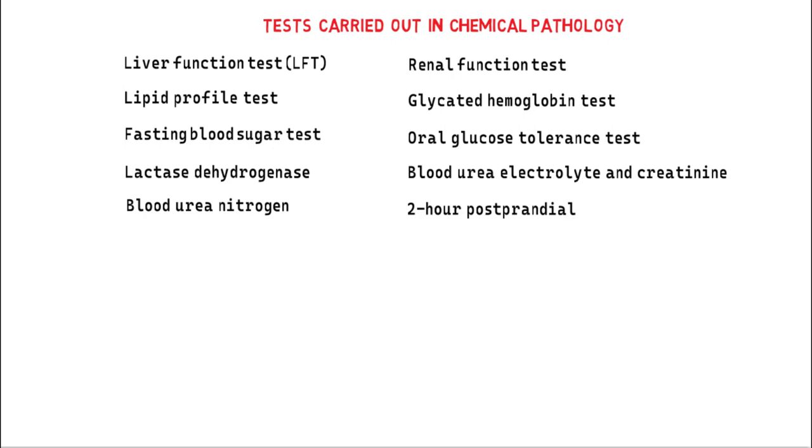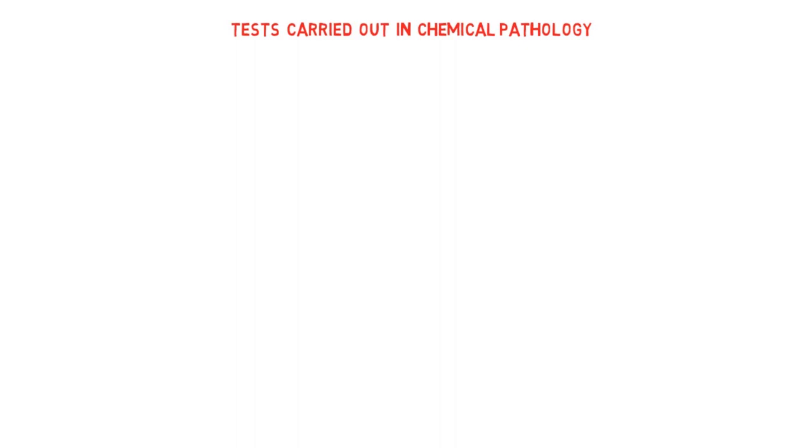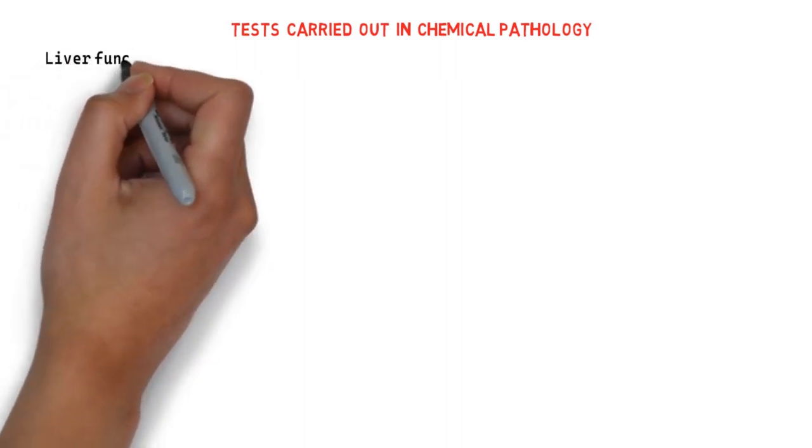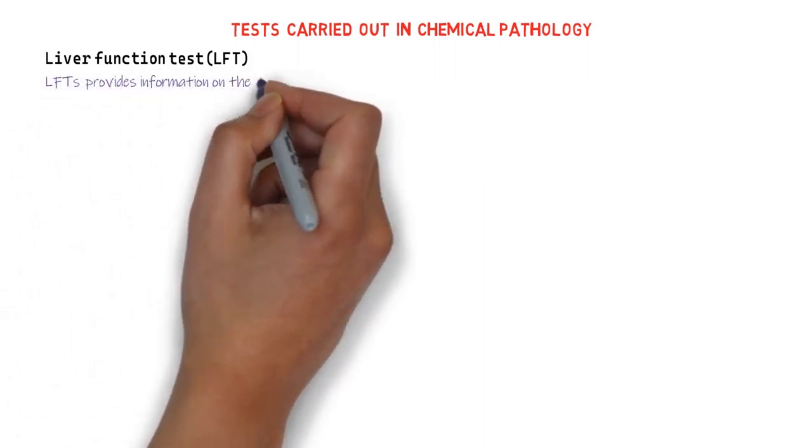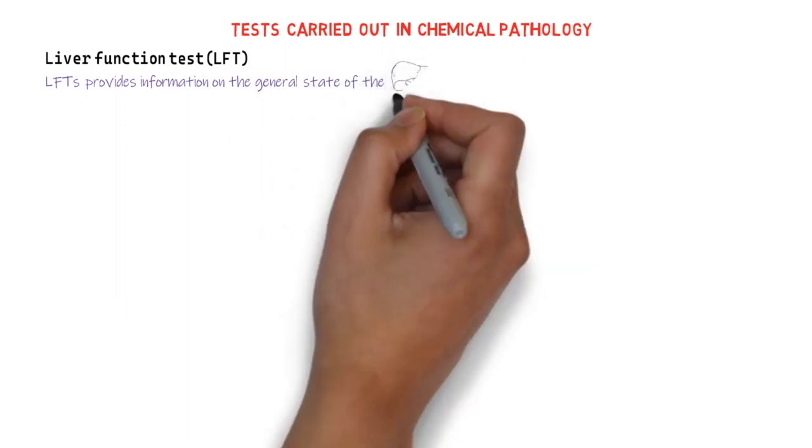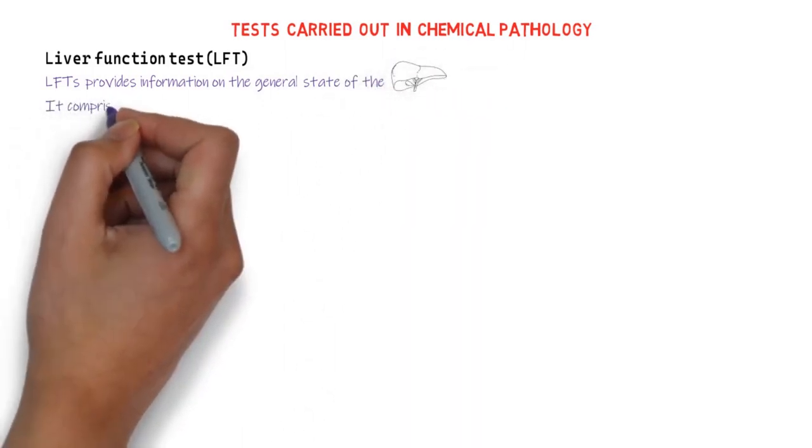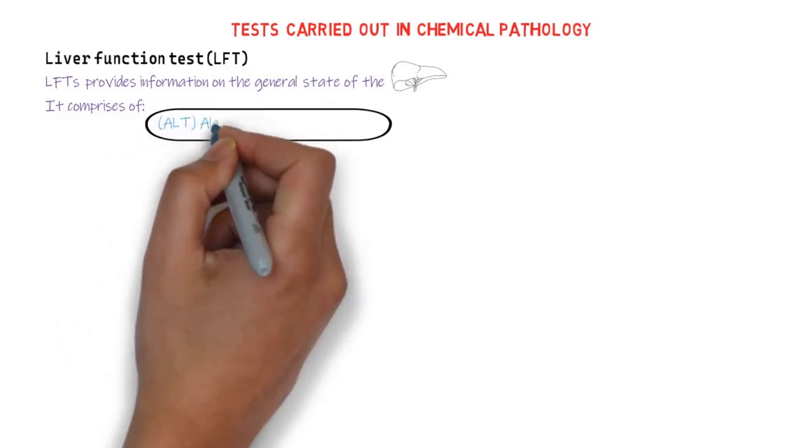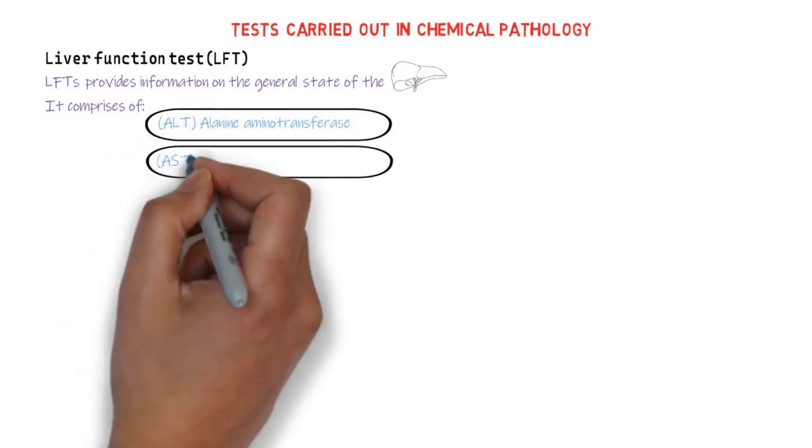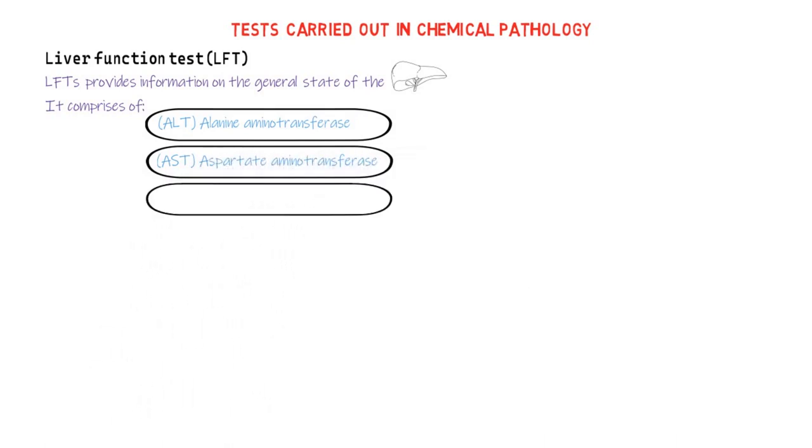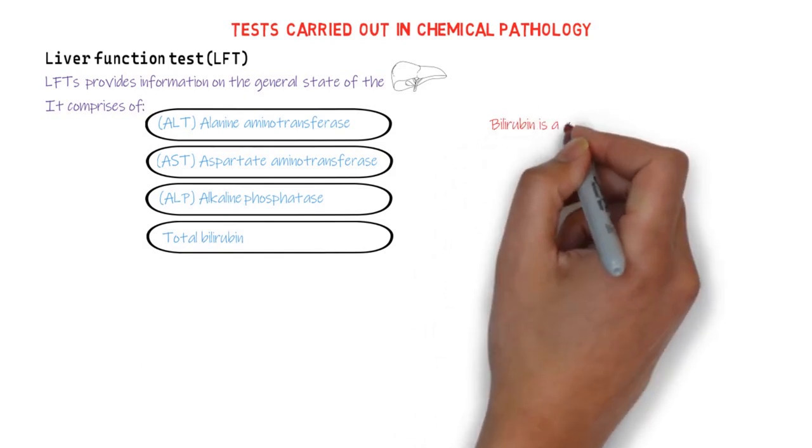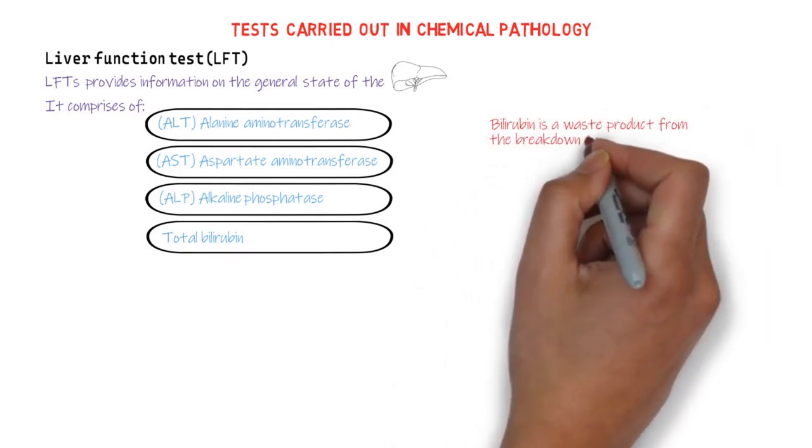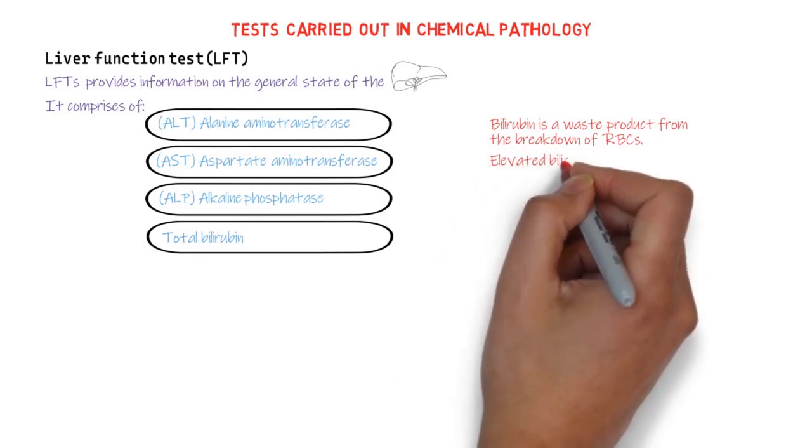Let's discuss a few of these tests. The liver function test, LFTs for short. LFTs are a group of blood tests that provide information on the general state of our liver. It comprises of tests like ALT (alanine aminotransferase), AST (aspartate aminotransferase), ALP (alkaline phosphatase), and total bilirubin. Bilirubin is a waste product from the breakdown of red blood cells, so an elevated level of bilirubin indicates liver dysfunction.